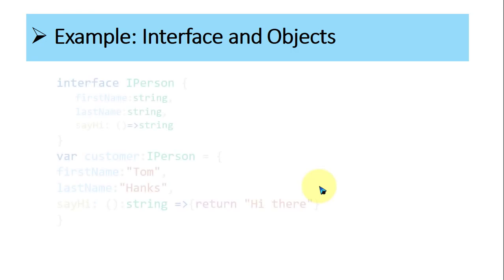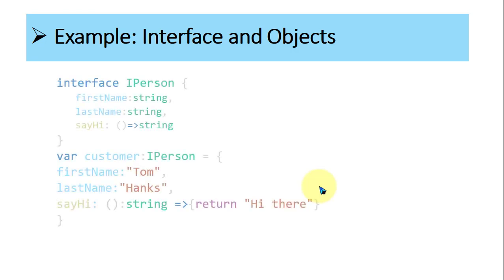For example, look at the first example in TypeScript. An interface is used in a variety of types. The first is the interface in objects. So interface IPerson is declared — 'interface' is the keyword and this is the name of the interface.